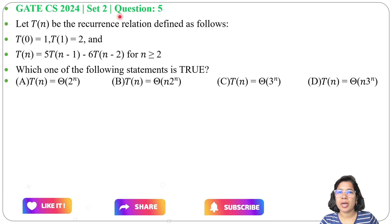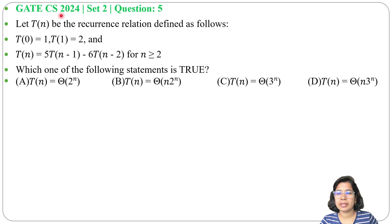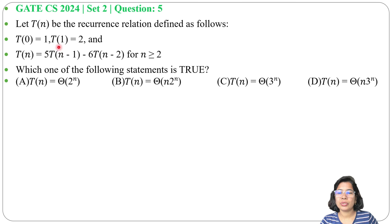Let's solve a previous question on algorithm analysis. This question was asked in GATE year 2024, Set 2, Question number 5. Let T be the recurrence relation defined as follows: T(0) = 1, T(1) = 2, and T(n) = 5·T(n-1) - 6·T(n-2) for n ≥ 2. Which one of the following statements is true? Four options are given.